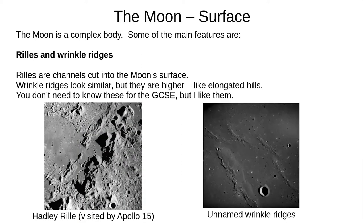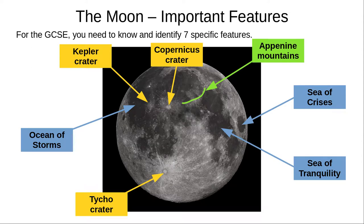Lastly, here are two features that you don't need to know for the GCSE, but I think are cool. Rills are channels cut into the Moon's surface, and wrinkle ridges are like upside-down rills. We don't fully understand how these were formed. For the GCSE, you need to know the names of seven specific features on the Moon: three craters, three Maria, and one mountain range.